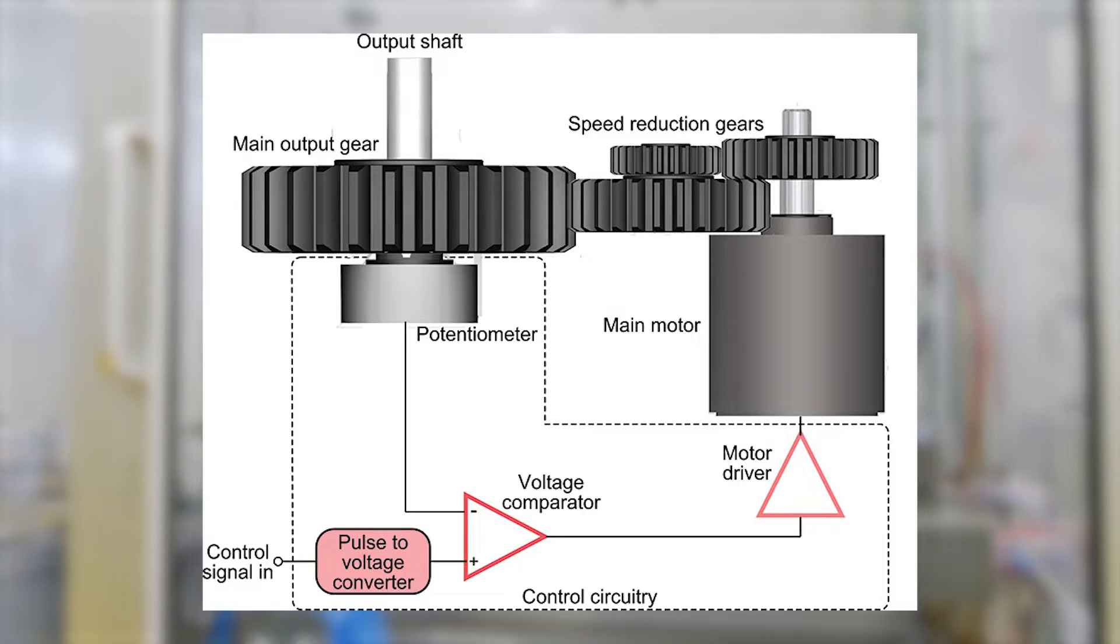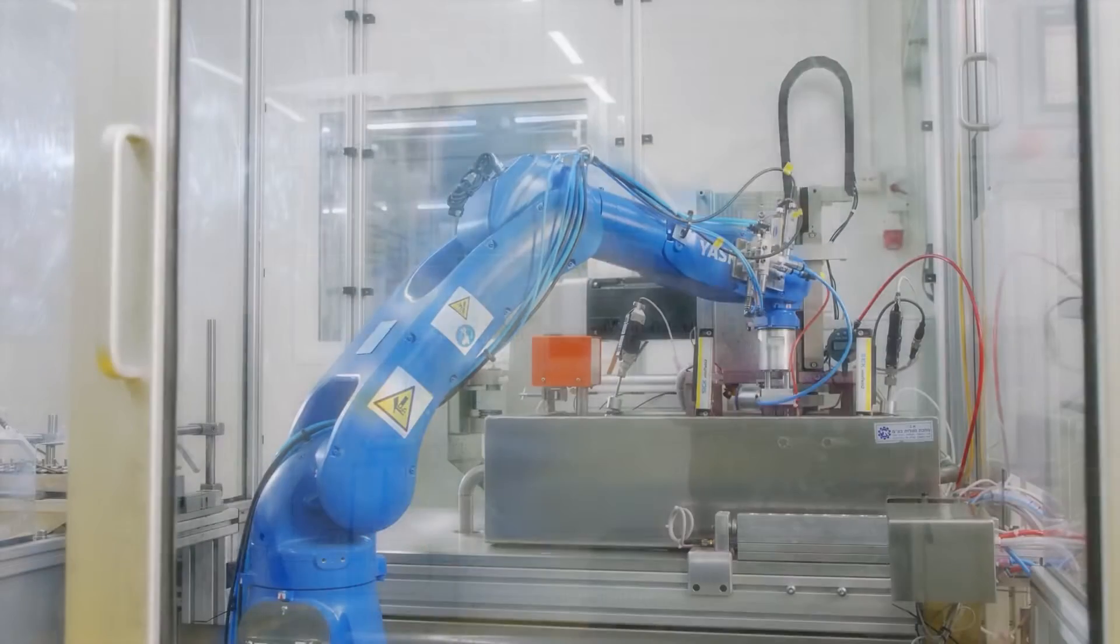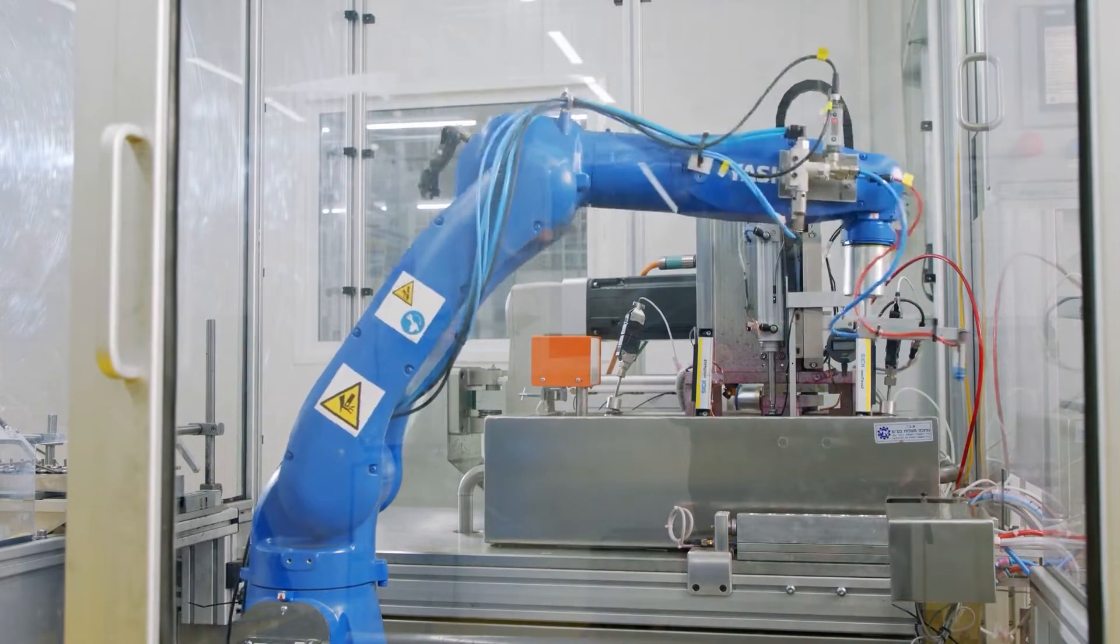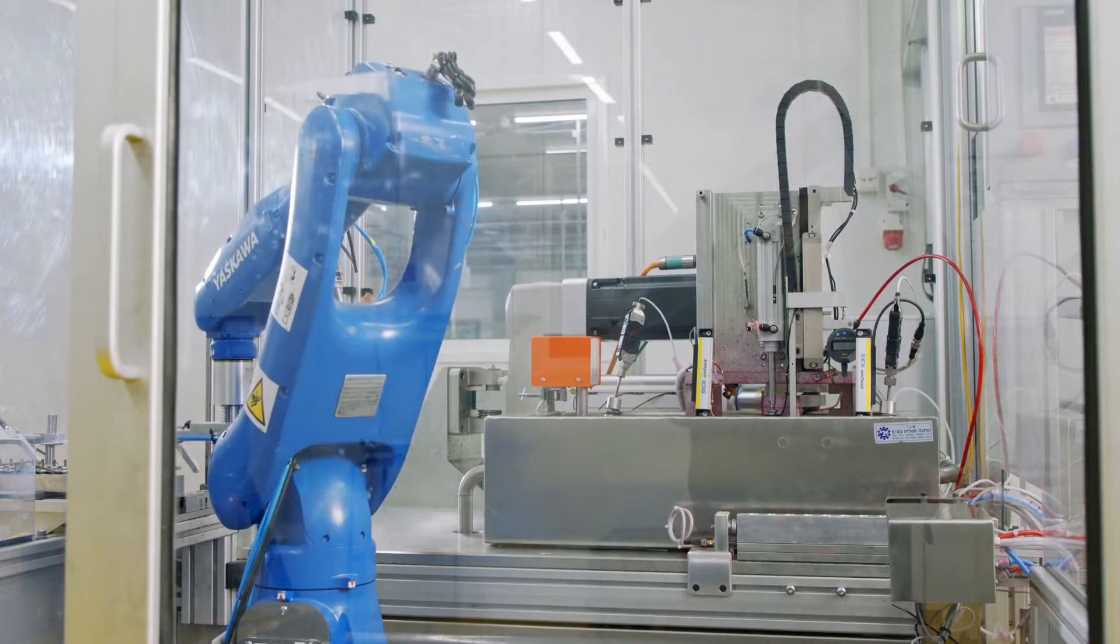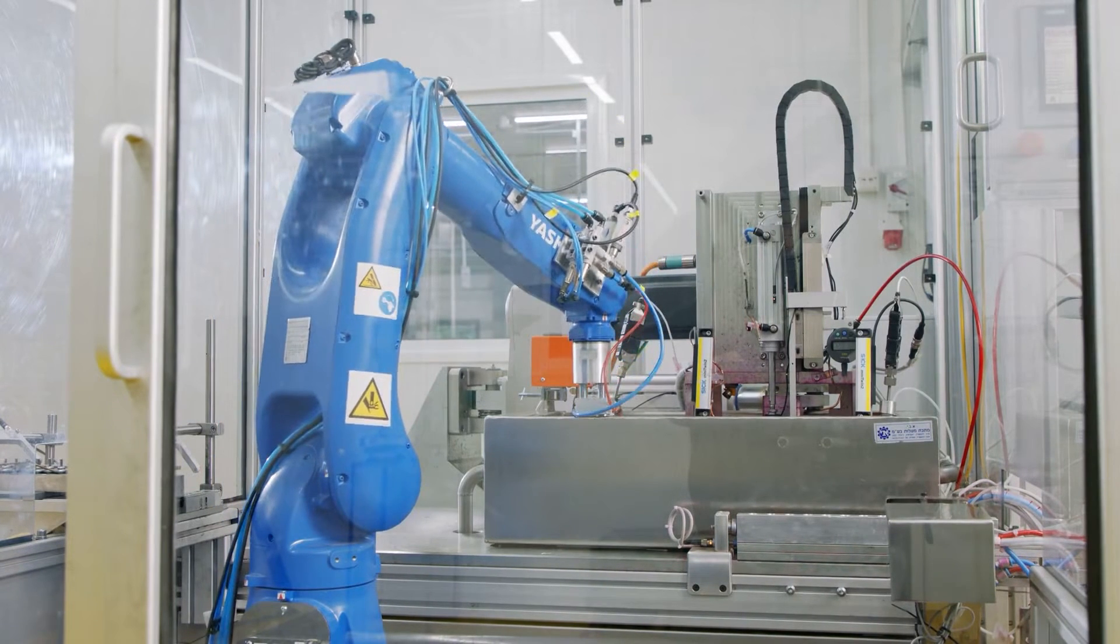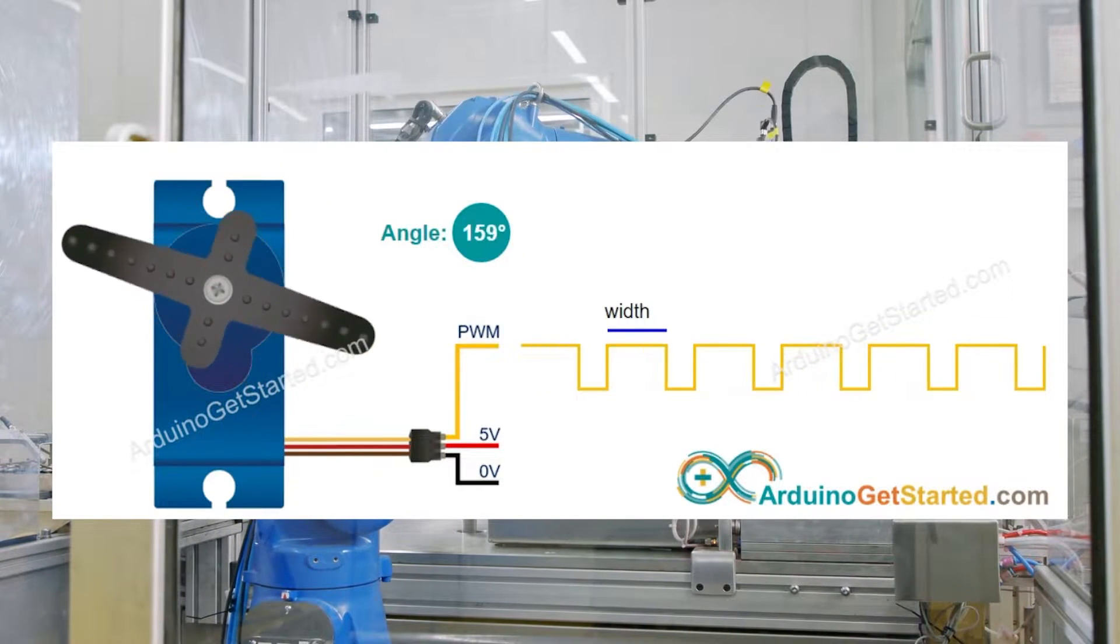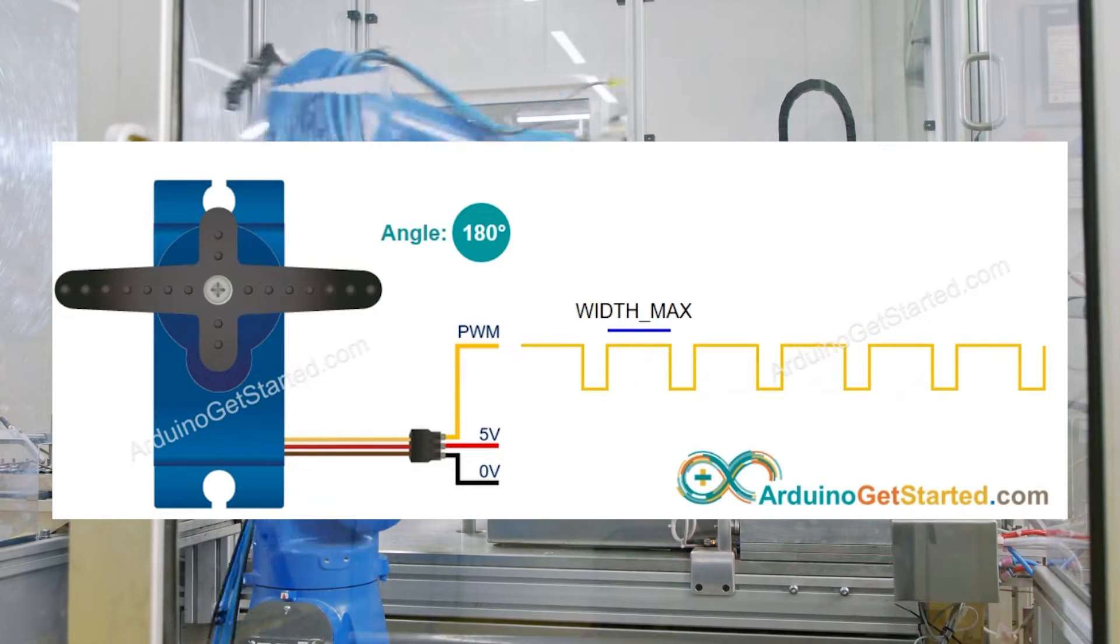This third signal is called error signal and this error signal is amplified and then fed to the motor. The input signal or the command signal that we provide is usually in the form of pulse width modulated signal. Based on the pulse width modulated signal that we provide to the control terminal, the position of the shaft changes.